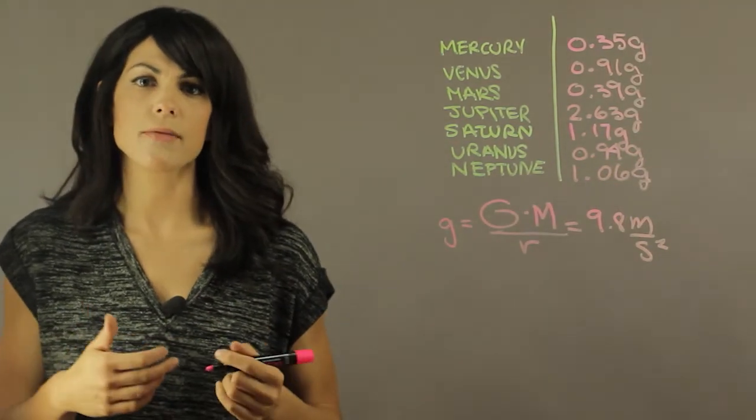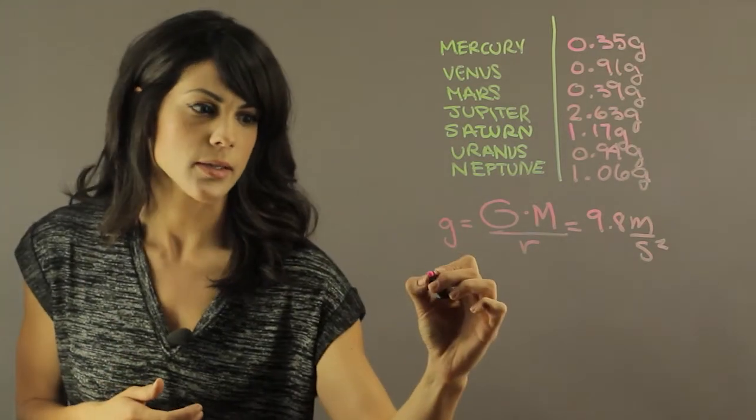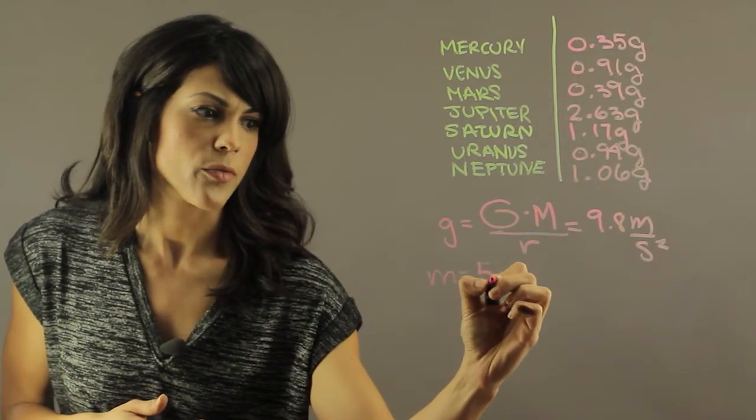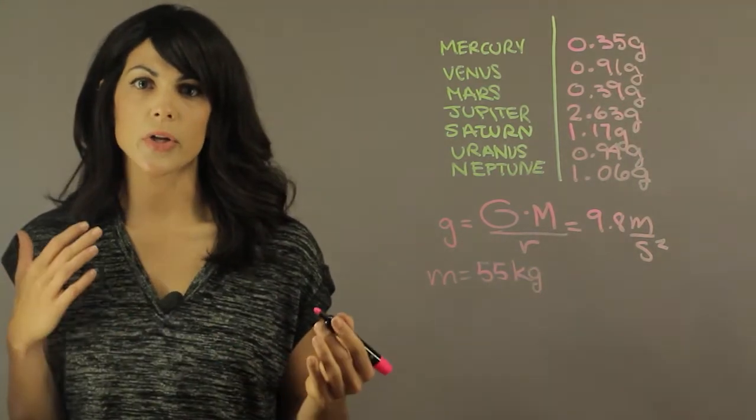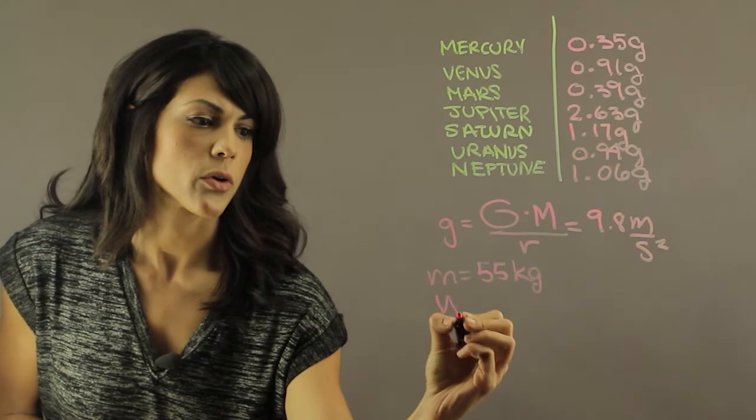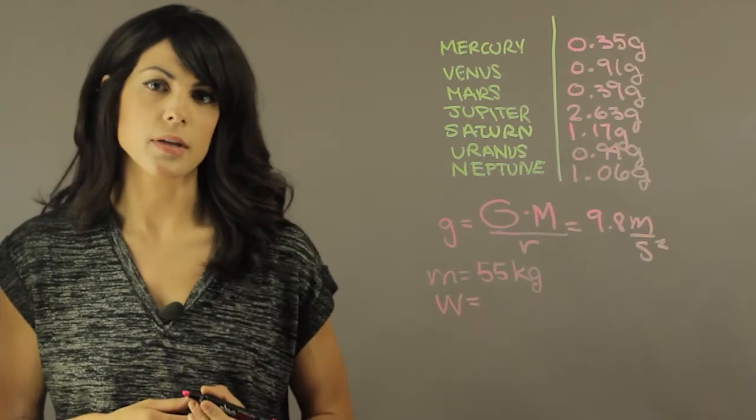Now let's say that you have somebody who has a mass of 55 kilograms. Let's figure out what the weight is on Earth. We'll use the equation for weight,